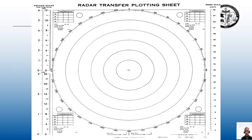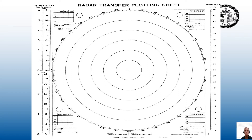This is a standard radar transfer plotting sheet. Along the left-hand edge, you can see four distance scales: a 6-mile scale, a 12-mile scale, a 3-mile scale, and a 24-mile scale. Along the right-hand side there's a speed scale in knots — we will not be using that scale. At the bottom of the plotting sheet is a logarithmic time-speed-distance scale. I like to scratch off the range scales I am not going to be using. Since we are going to be using a 12-mile range scale, I have circled the 12-mile scale.